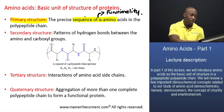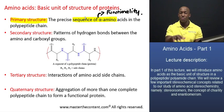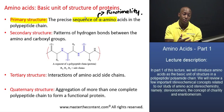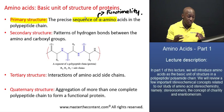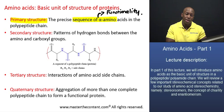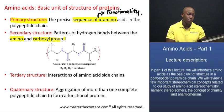Now, what about the secondary level of organization? Remember, this is just a brief overview — we're going to delve into these different levels of structure when we tackle proteins in the next lecture. As far as the secondary structure is concerned, it basically refers to the patterns of hydrogen bonds between the amino and carboxyl groups.